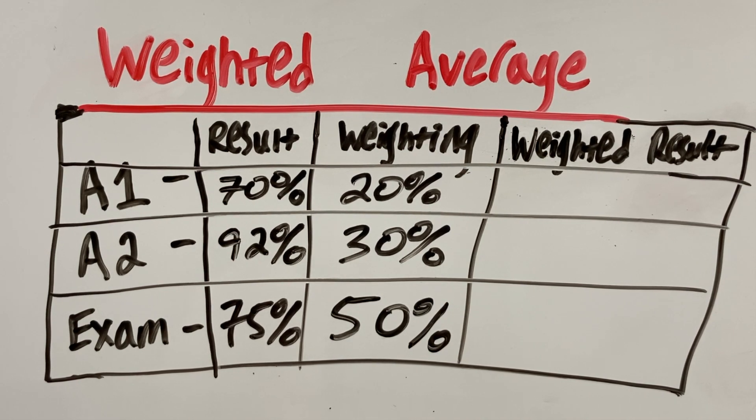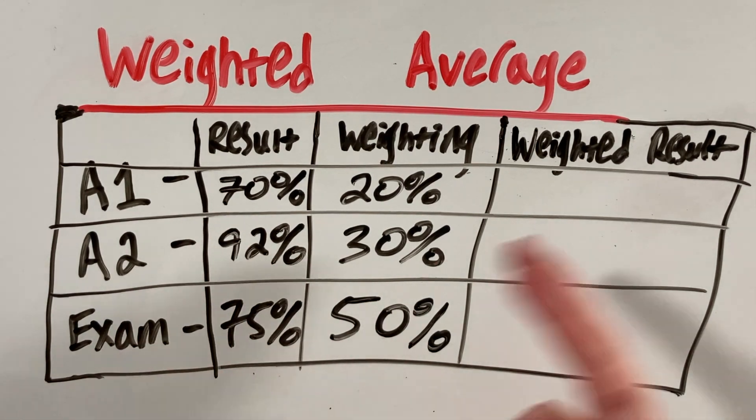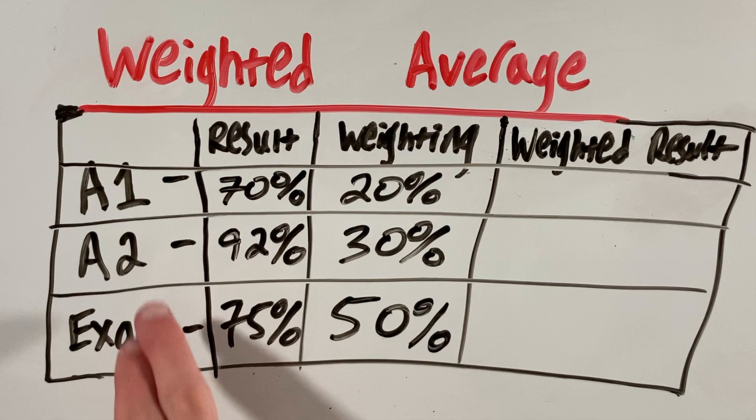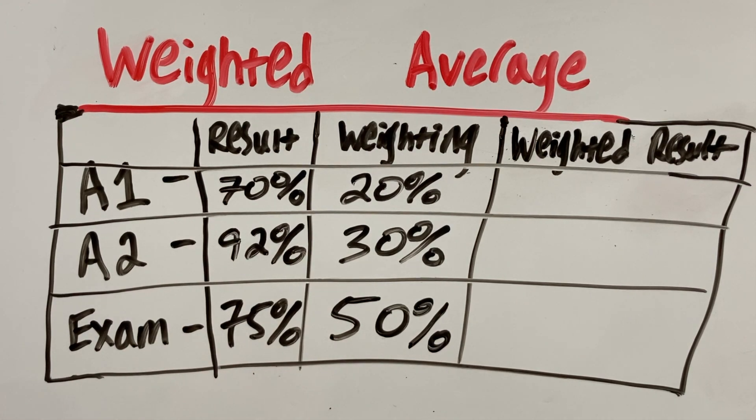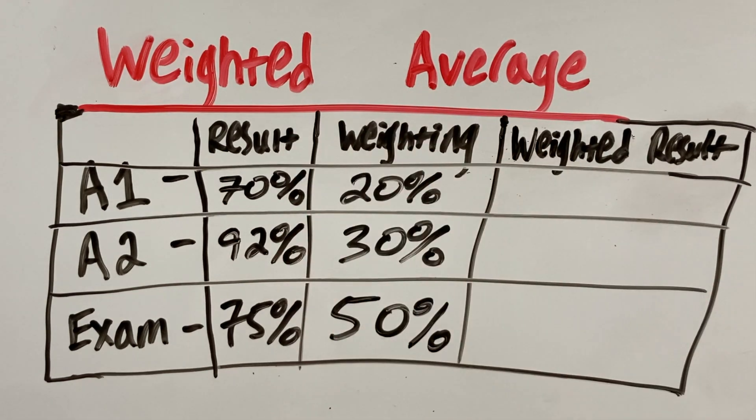Now in order to calculate the total weighted average, we calculate the weighted result of each of our three items, which we can then sum together to get our total weighted average.